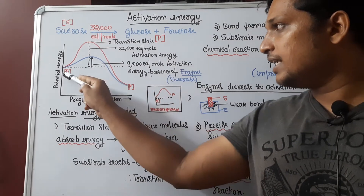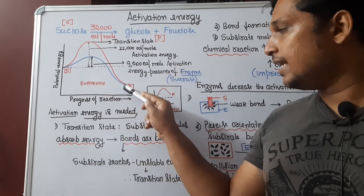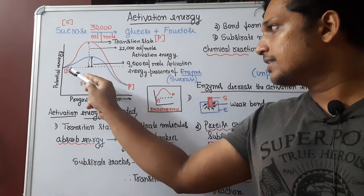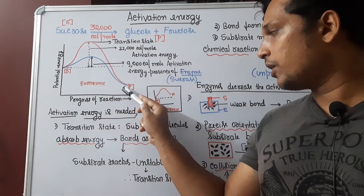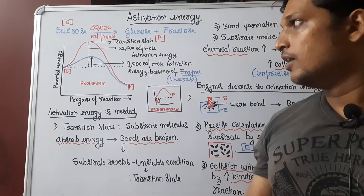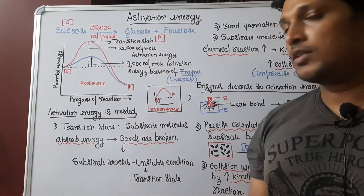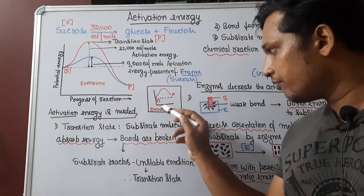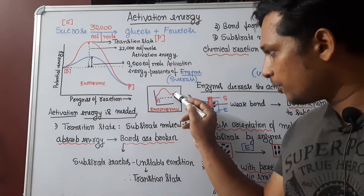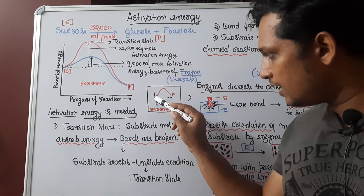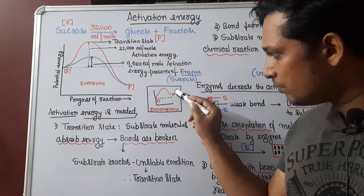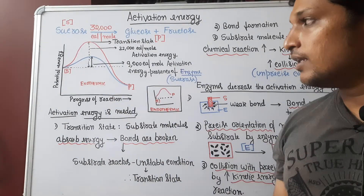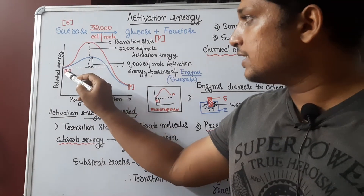When you compare substrate and product, the energy of substrate is more and product has less energy in it. That means the substrate has to lose its energy to form a product. Such a reaction, where substrate is having more energy whereas product is having less energy, is known as an exothermic reaction. In an endothermic reaction, the substrate has less potential energy whereas the product is having more potential energy.